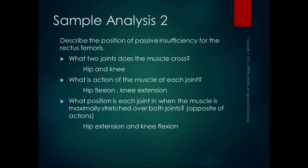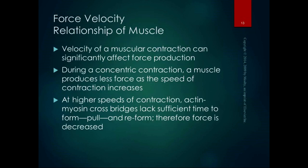The rectus femoris is the only one of the quadriceps that crosses the hip — the others only cross the knee. So the hip position doesn't matter for the other quadriceps, but it does for the rectus femoris. Hopefully you can let that idea settle, work through the problems on the pre-lab worksheet, and then we'll go over it again in lab. We will entertain this idea of active and passive insufficiency for all the different muscles that could possibly be actively or passively insufficient.